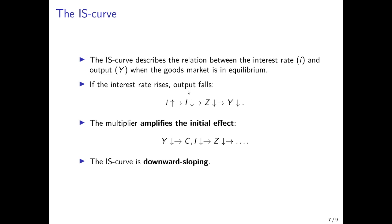If the interest rate rises, output falls in the end. The chain by which this happens is that a higher interest rate leads to a decrease in investment, this leads to a decrease in aggregate demand, which decreases income, and this in turn decreases consumption and investment further according to the multiplier effect, and so on and so forth. So we would get, in the end, a lower income level, and the IS curve is downward sloping.